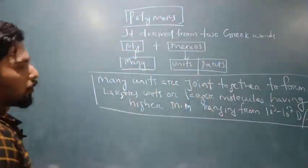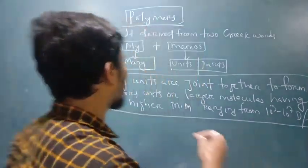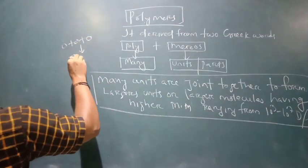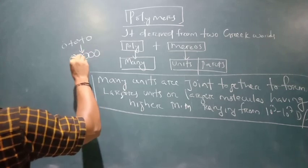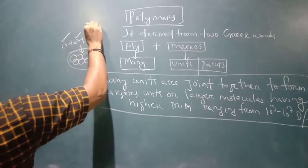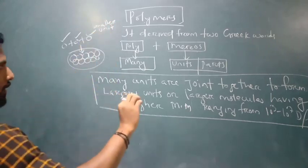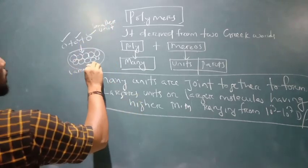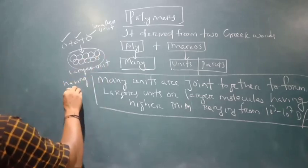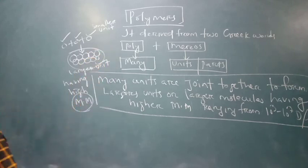The repeating unit is joined together to form a large molecule with high molecular mass. Smaller units combine through bonds to form larger units — big, huge units. These are macromolecules: large-sized molecules made of repeating units combined together with a higher molecular mass.